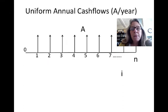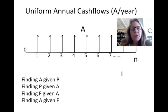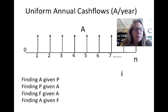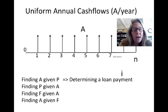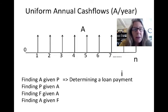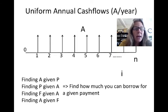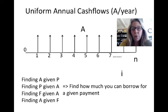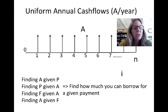For uniform annual cash flows, we can find the A value given a P value — this is used in determining a loan payment, useful if you're getting a mortgage or borrowing money for a car. We can also find P given A: for example, if you can afford a $200 payment, how much can you borrow at a certain interest rate? Personal finance applications are important here.